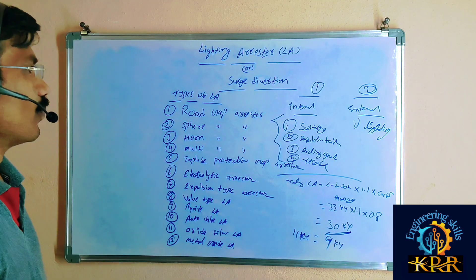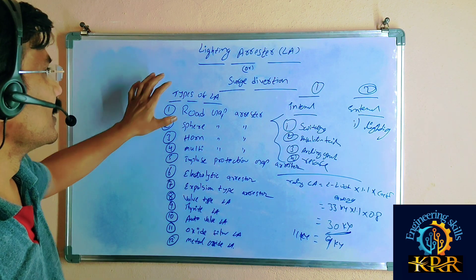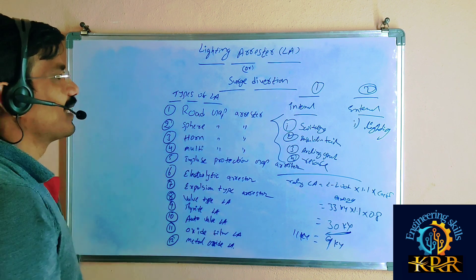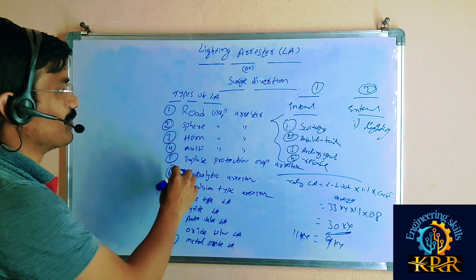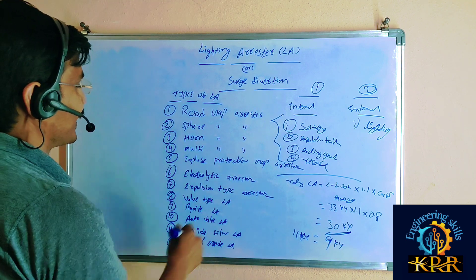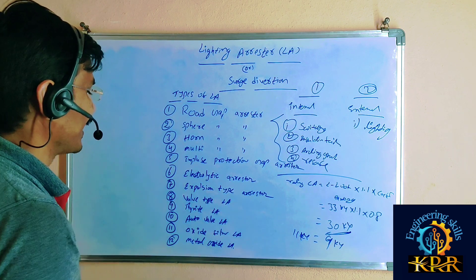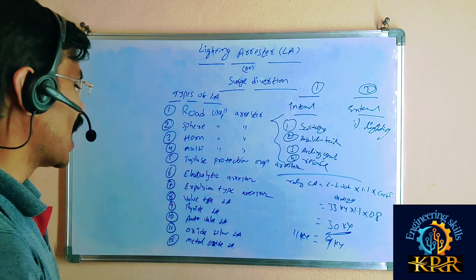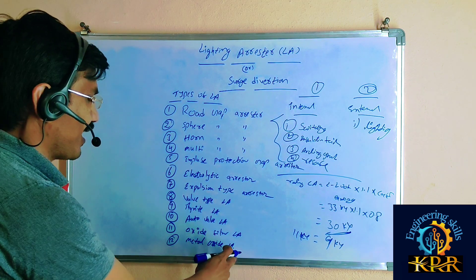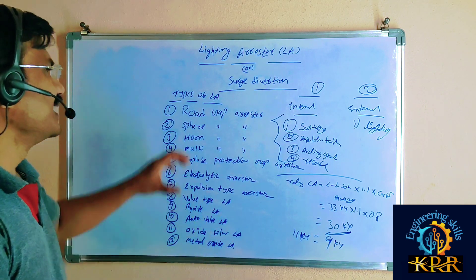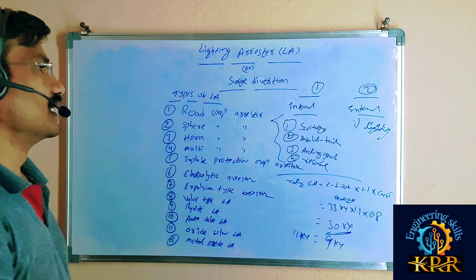The lightning arrestor may be classified into many types: rod gap arrestors, spark gap arrestors, horn gap arrestors, multi-gap arrestors, impulse protection gap arrestors, electrolytic arrestors, expulsive type arrestors, valve type lightning arrestors, oxide film lightning arrestors, and metal oxide lightning arrestors. These are the many types of lightning arrestors available in the market, used as per our requirements.